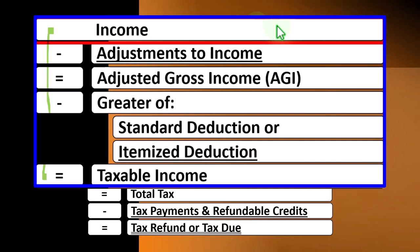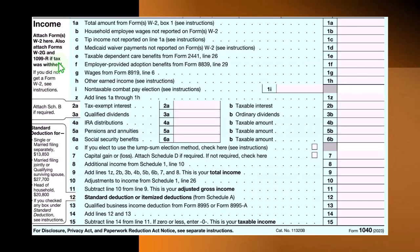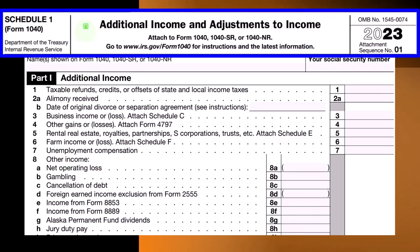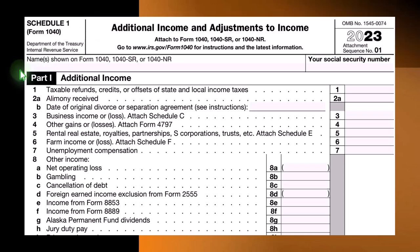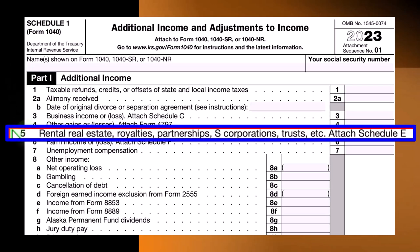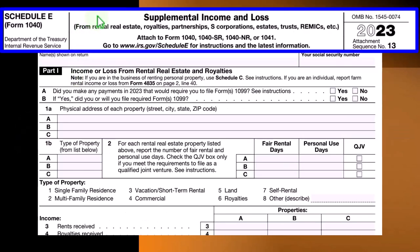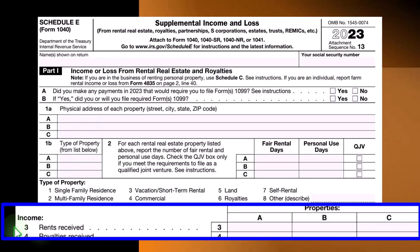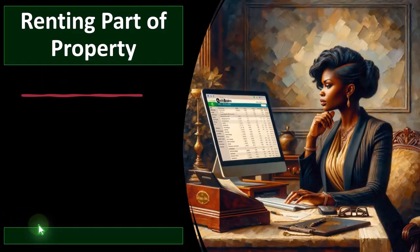The income tax formula outlines the calculation on Form 1040. The Schedule E ultimately rolls into line 8, additional income from Schedule 1, line 10. On Schedule 1, additional income and adjustments — Part 1, Additional Income — the Schedule E rolls into line 5, rental real estate, royalties, etc. This is the Schedule E supplemental income and loss from rental real estate, royalties, etc., presented in an income statement format broken out by rental property.